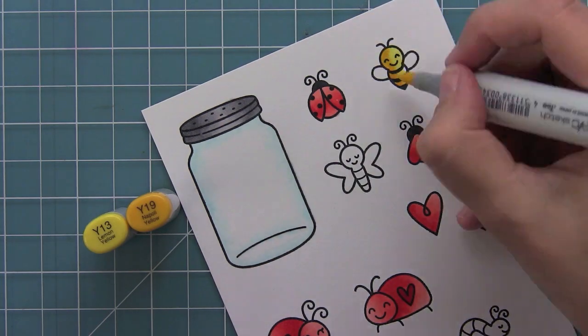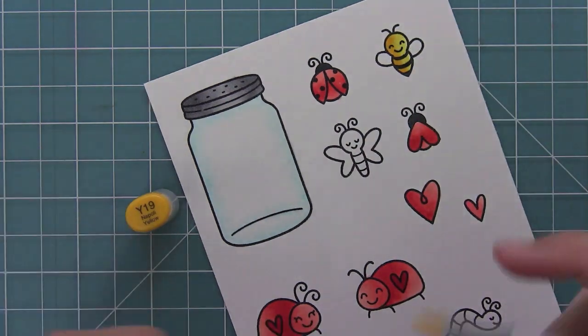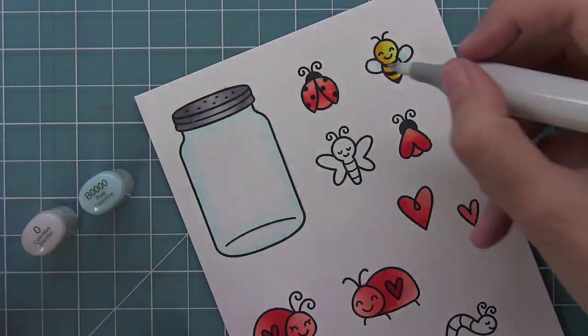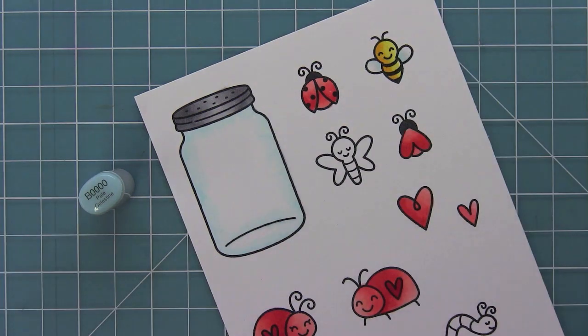Often with small images like these I just use two different shades of markers to create my images. And that's plenty because they are so little, so really just the two shades does give it a lot of dimension.